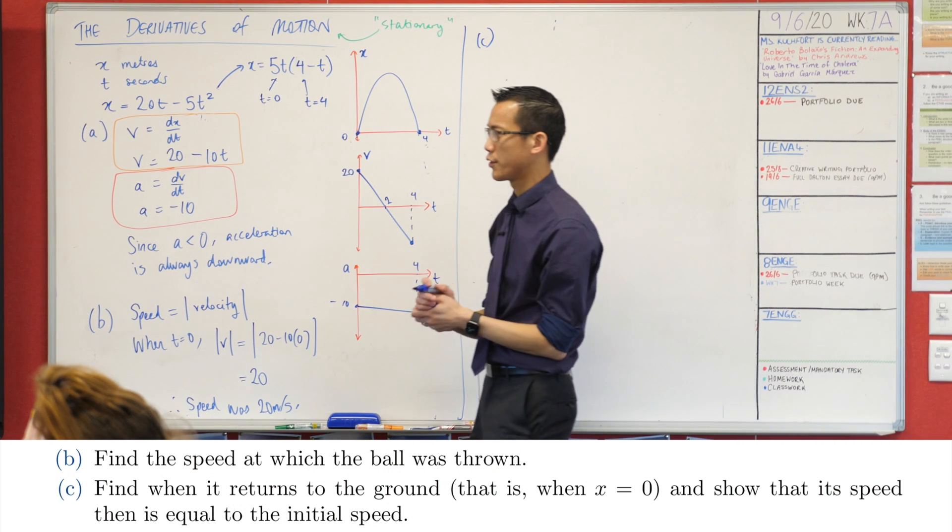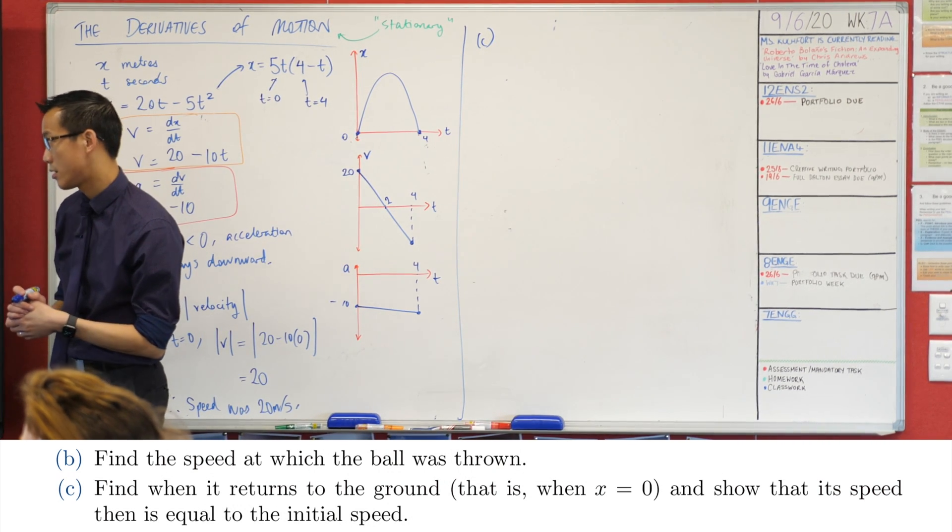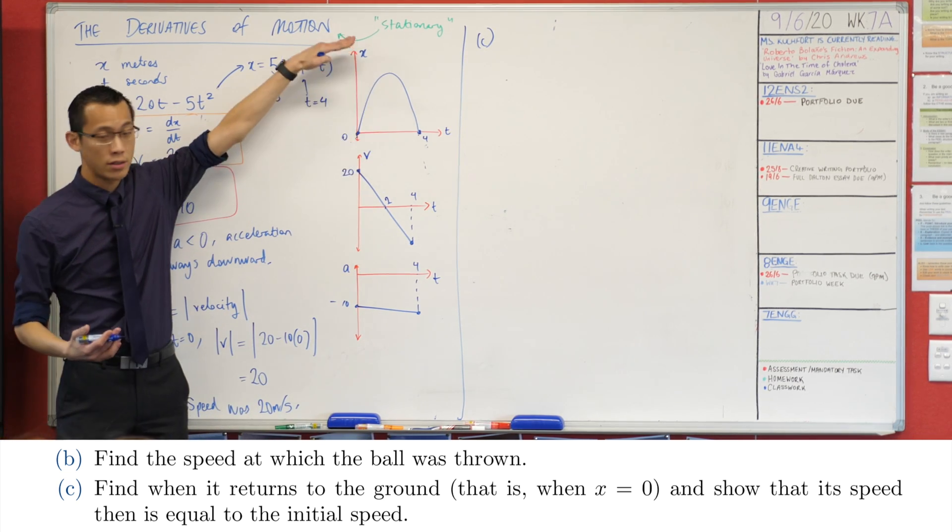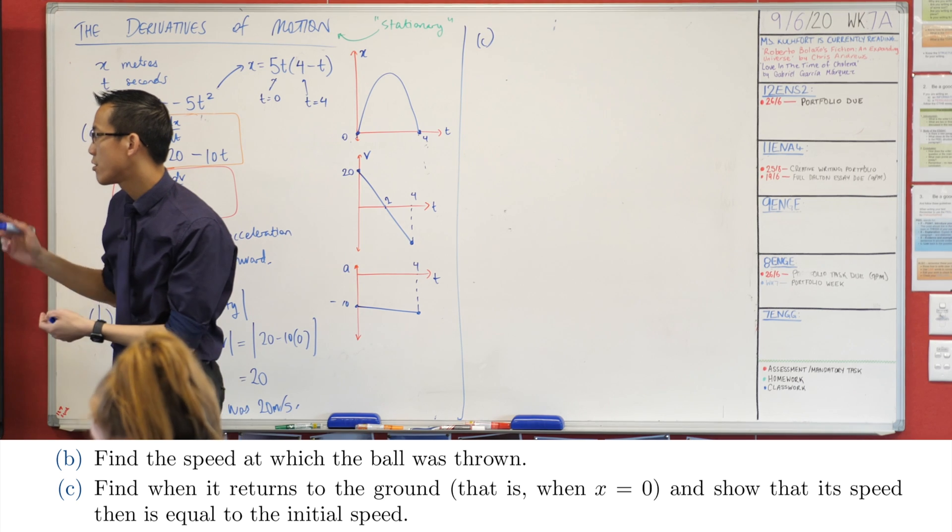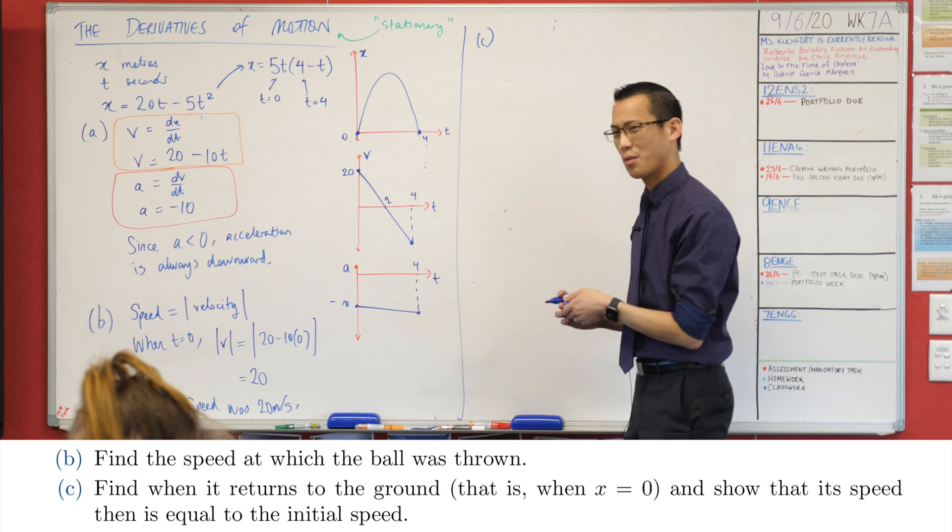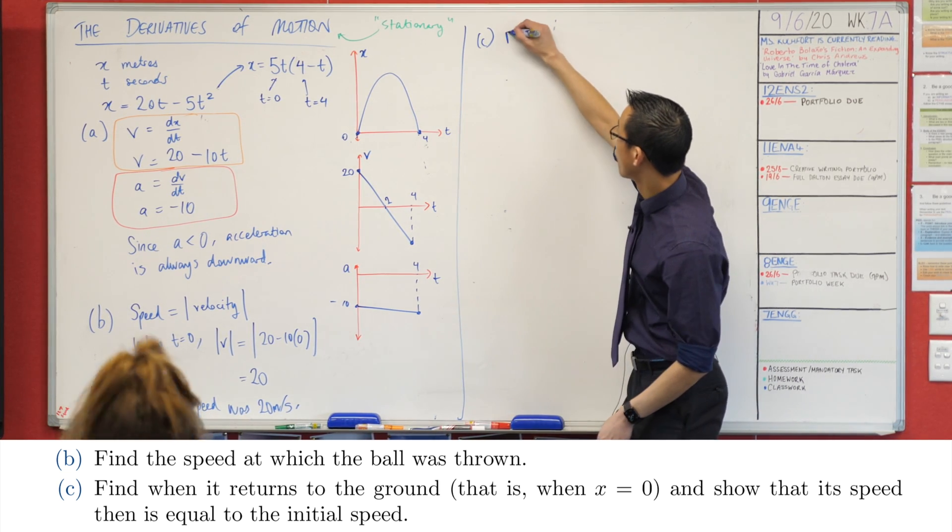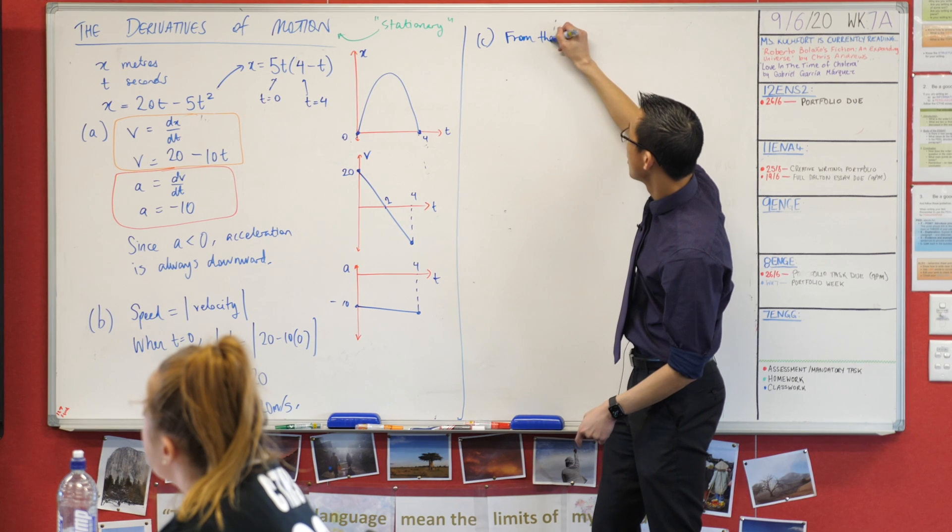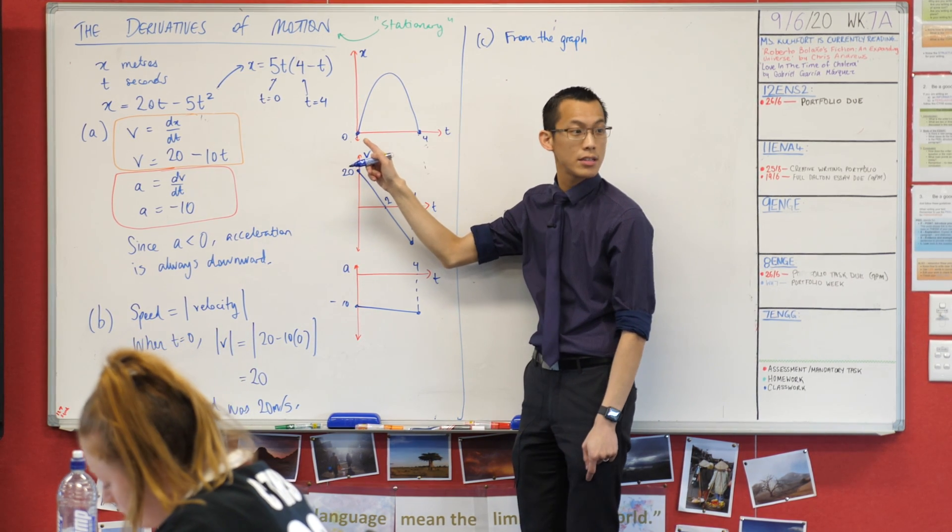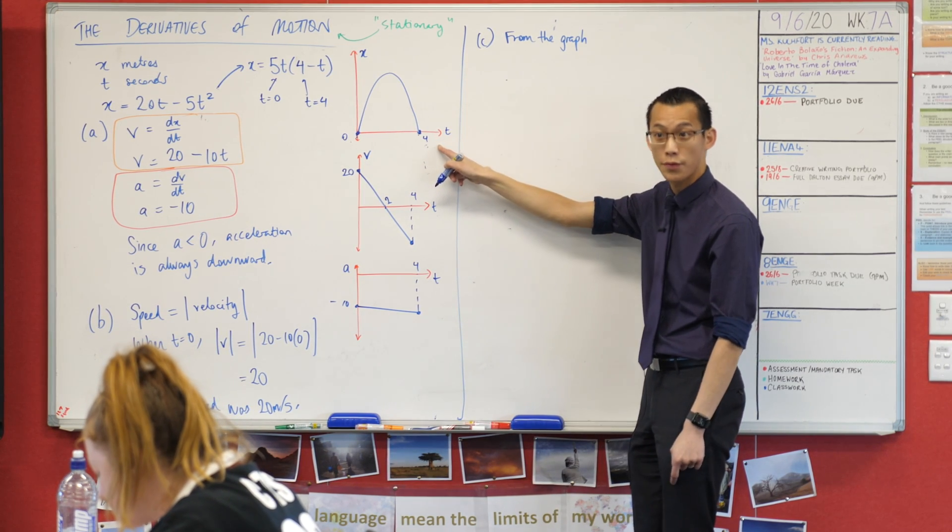What does part c ask? Have a look over it with me. Find when it returns to the ground, it even sort of helps you out, that's when x equals zero because that's our vertical axis, and show that its speed there is equivalent or equal rather to the initial speed. Now we've actually, because we drew it, we already kind of know this. I can say from the graph, we know that x starts off at zero, when does it come back to x equals zero? At time equals four.